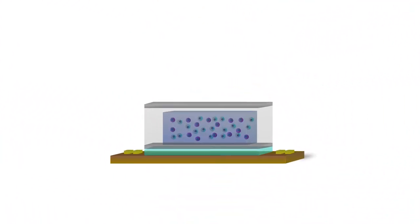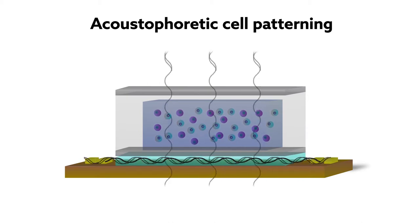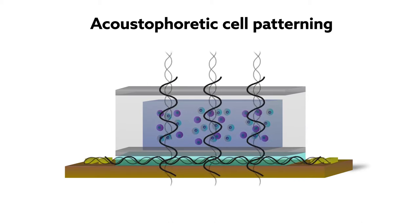To engineer tissues that meet these requirements, scientists developed a new acoustrophoretic cell patterning technique. The method uses sound waves to precisely align cells into user-defined patterns.